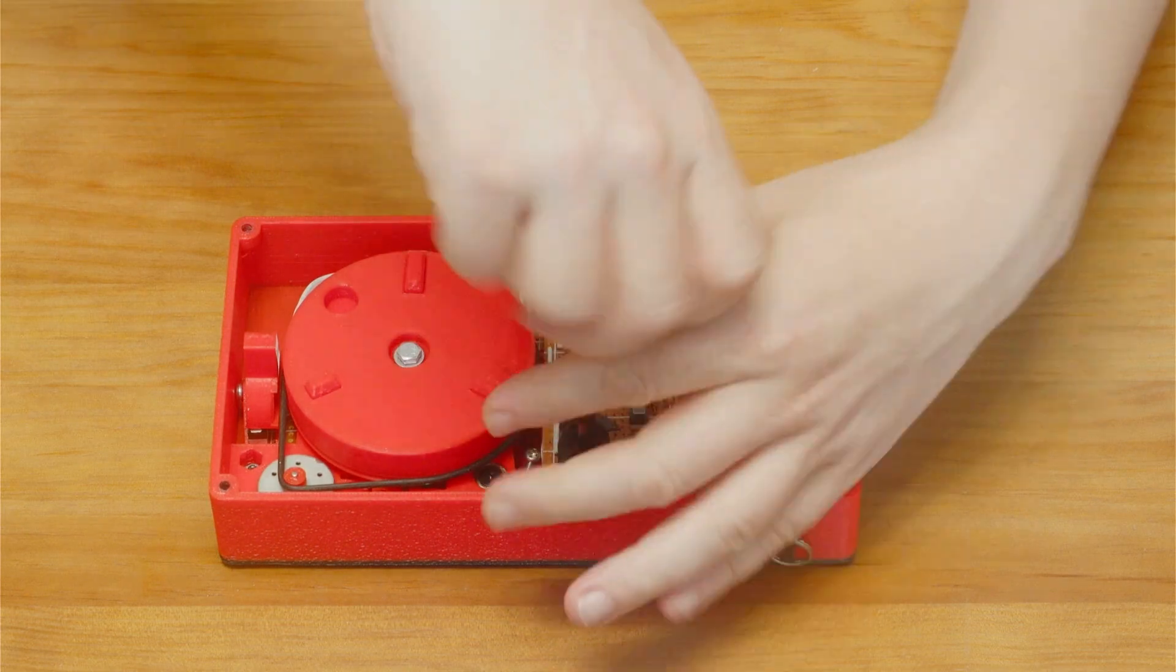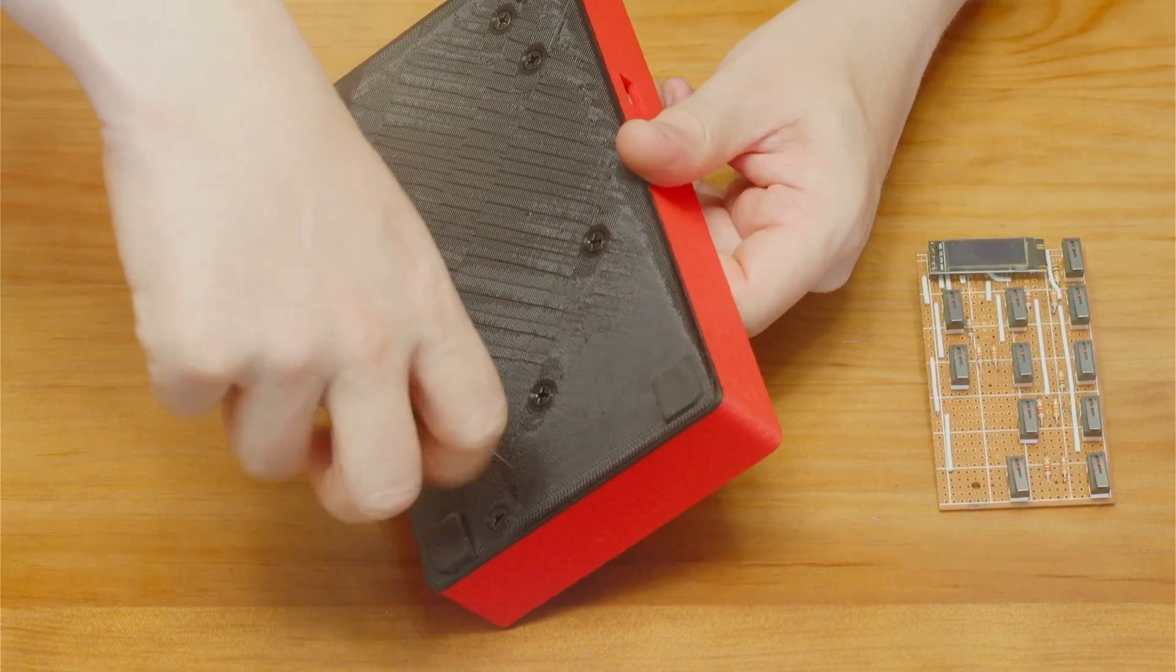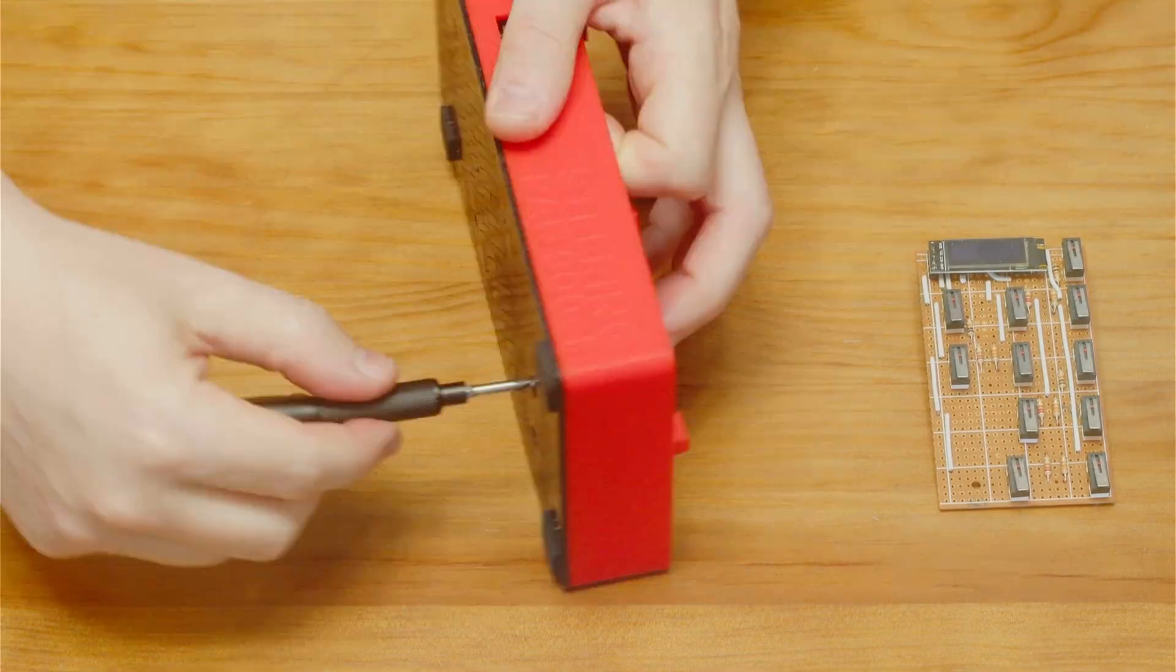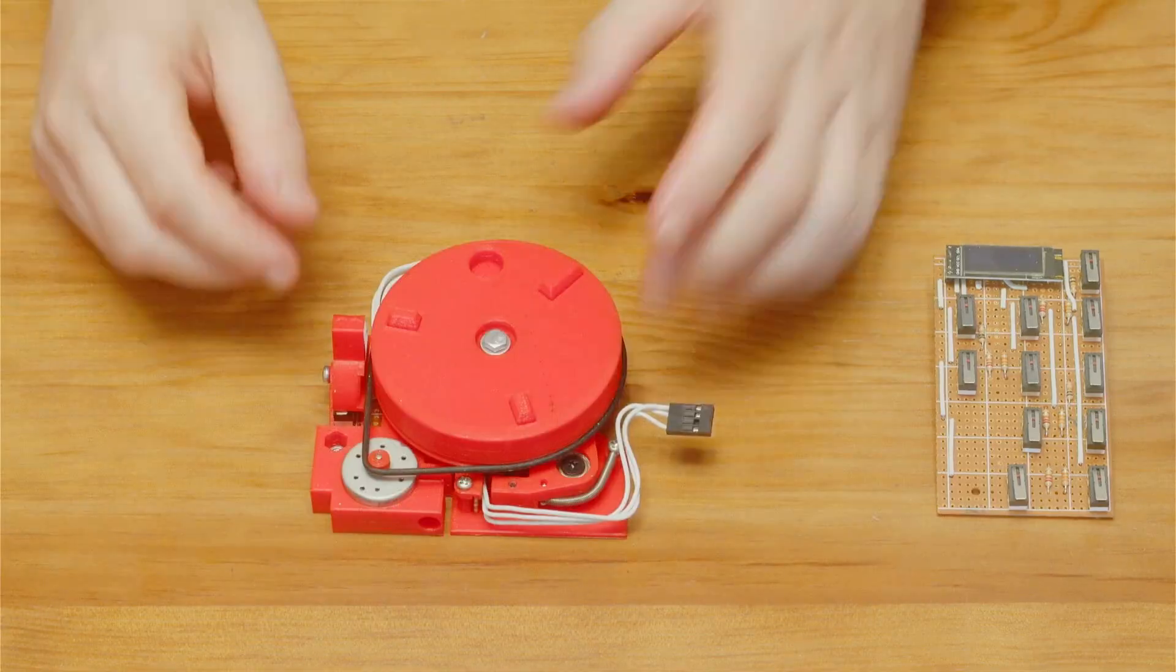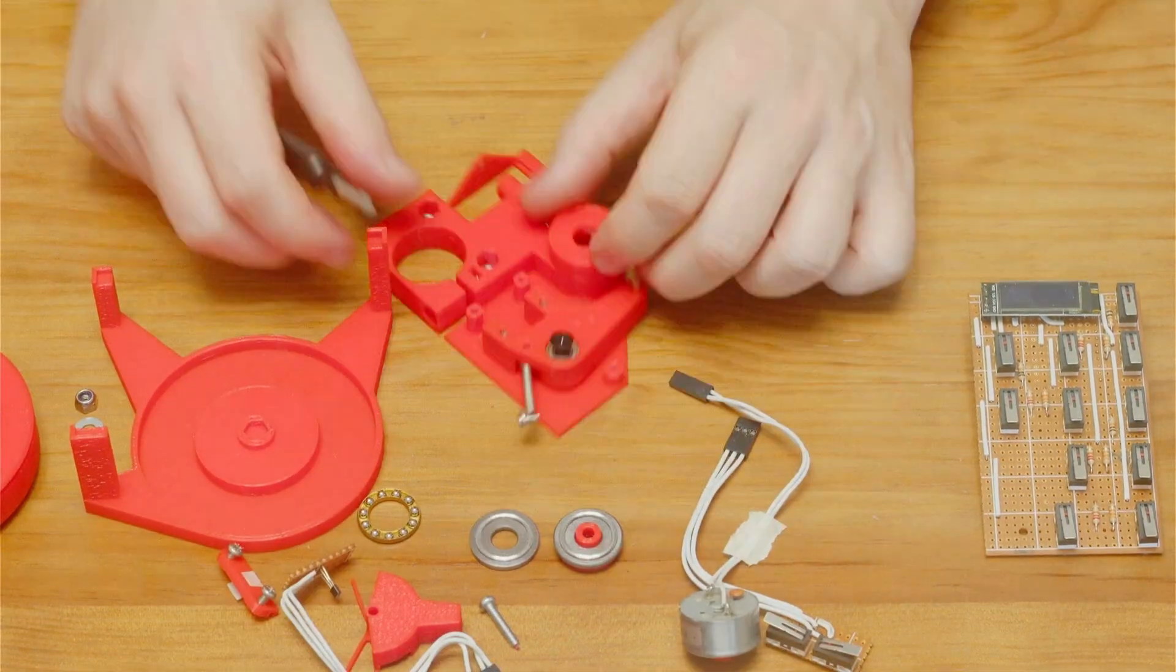I start by disassembling the old block to replace the base. Mounting everything together is very similar to the previous version with a slight difference in the installation of the sensor.